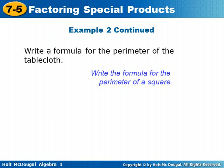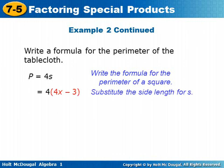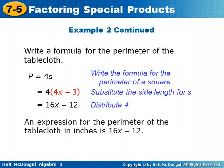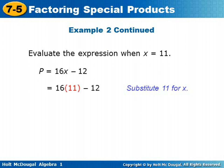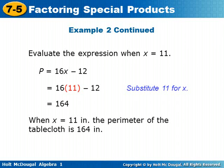Now we have to write a formula for the perimeter of the tablecloth. Perimeter P equals 4 times the side length. We substitute the side length 4x minus 3 and multiply: 4 times 4x minus 3 gives us 16x minus 12. So the perimeter of the tablecloth in inches is 16x minus 12. Now we evaluate when x equals 11: perimeter equals 16 times 11 minus 12, which gives us 164. When x equals 11 inches, the perimeter of the tablecloth is 164 inches.